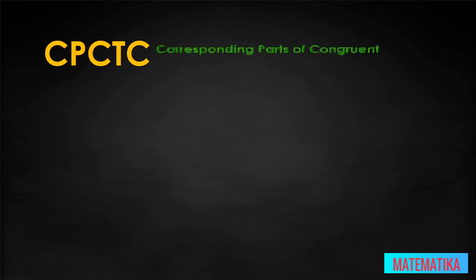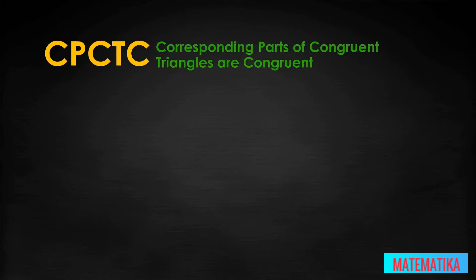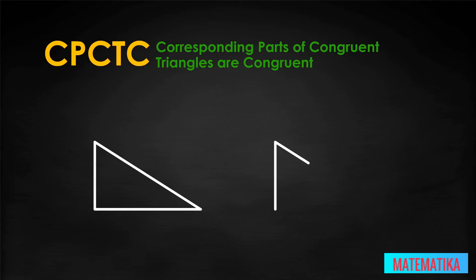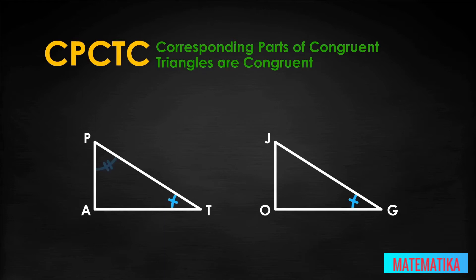CPCTC is an acronym for corresponding parts of congruent triangles are congruent. Here are two congruent right triangles: triangle PAT and triangle JOG. Notice the hash marks for the two acute interior angles, the hash marks for the three sides of each triangle, and the squares in the right angles.